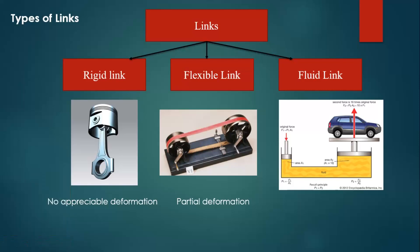So let us discuss rigid link first. The keyword is: no appreciable deformation. A rigid link is a link which does not undergo any deformation while transmitting motion. There is no appreciable deformation. For example, practical examples are connecting rod.